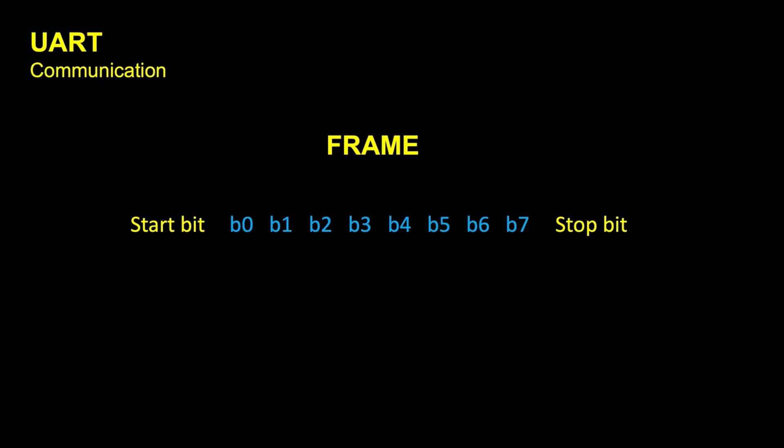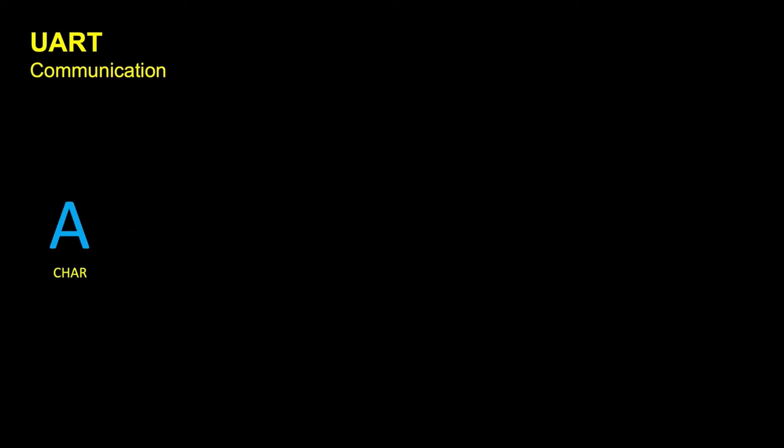Sometimes we can have 9 bits or 7 bits of data, and we can even add a control bit called a parity bit in order to do some error checking. But let's stay with this simple frame.